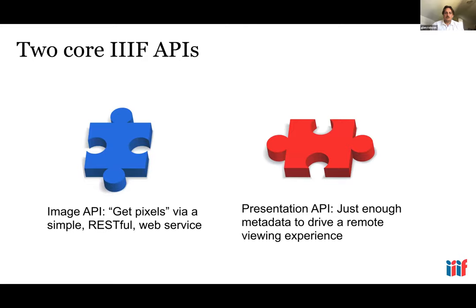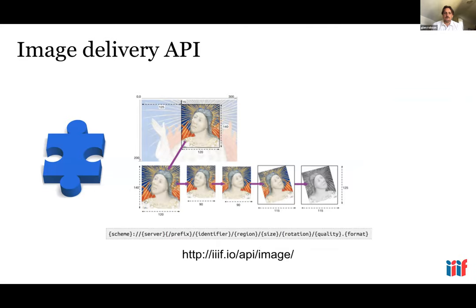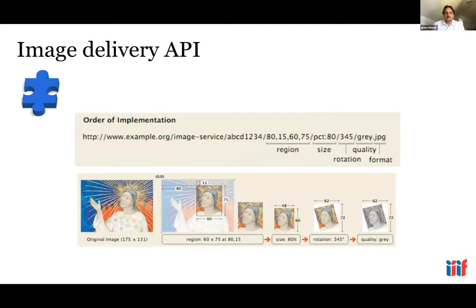This is all done by two core IIIF APIs — one that delivers pixels and one that delivers a presentation of the object. The image delivery API delivers the pixels using a URL that delivers a whole image or parts of an image at different resolutions. The image API can be used to select regions, select a size, rotate, select quality, and choose format. Everything up to the image identifier in the URL follows the image API spec.